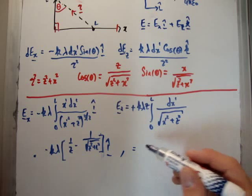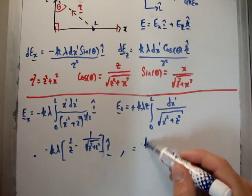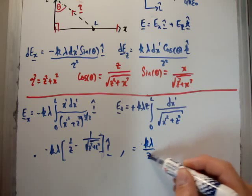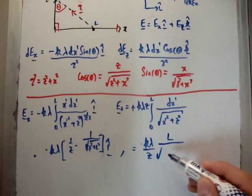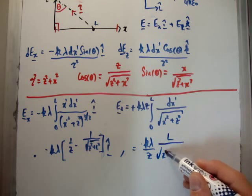And then in the z direction it's going to be equal to k lambda divided by z, then we're going to have an L over the square root of z² + L².